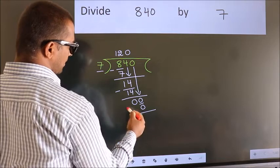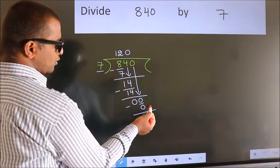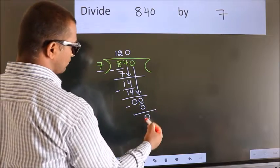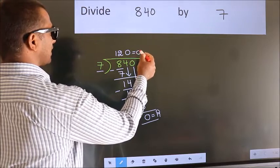Now we subtract and get 0. No more numbers to bring down, so we stop here. This is our remainder. This is our quotient.